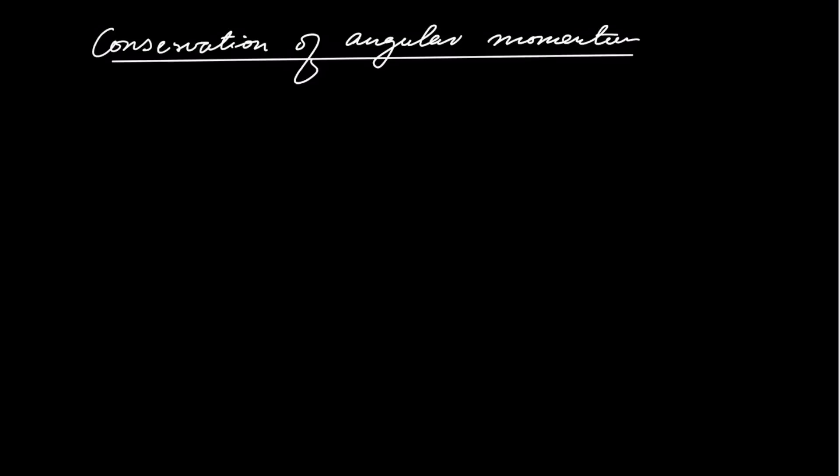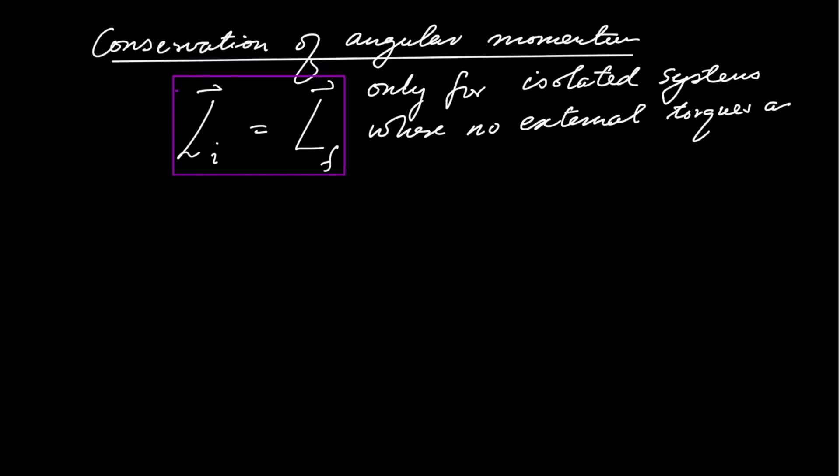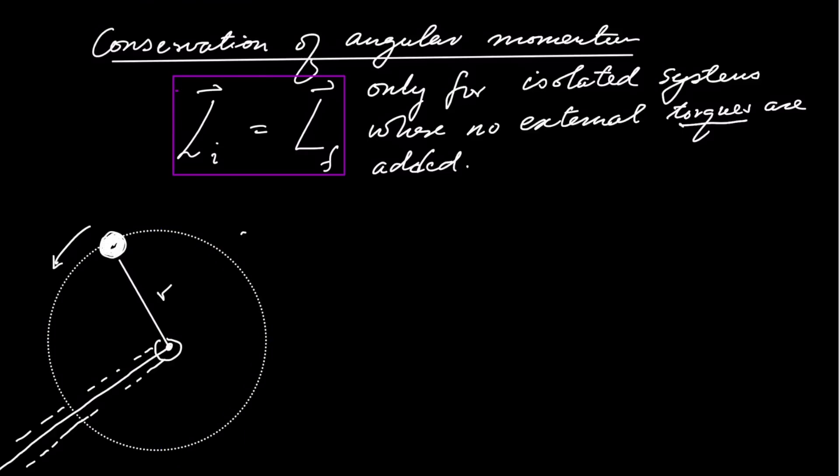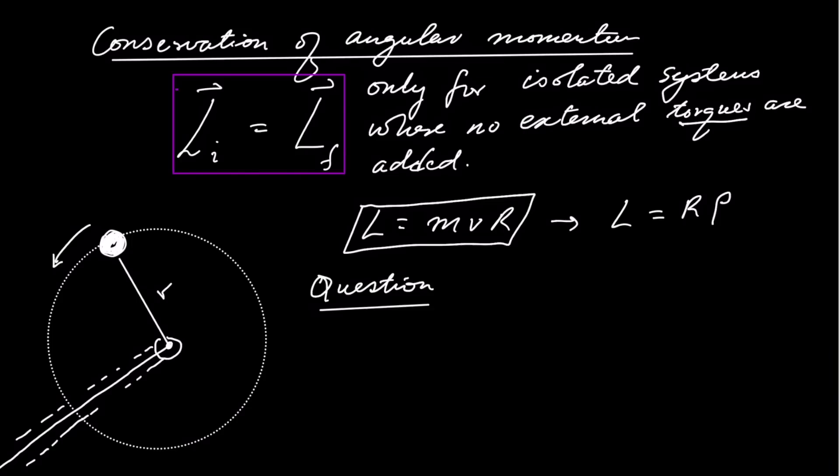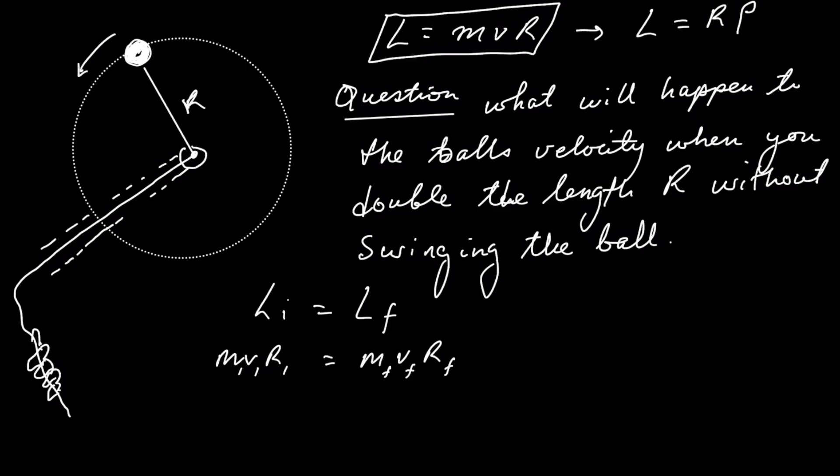Let's talk about conservation of angular momentum. It turns out that objects that are spinning or rolling or rotating don't want to stop, and just like conservation of linear momentum we can also say that for an isolated system the initial angular momentum will be the same as the final angular momentum. You've got to understand that this is only possible for isolated systems where no external torques are present. Now imagine you've got a ball tied to a string to be rotating about the radius r and I urge you to try this at home. So now the question is what will happen to the ball's linear speed when you double the length r without further swinging the ball. The final radius will be two times the initial radius. So the final velocity will be a half of the initial velocity.